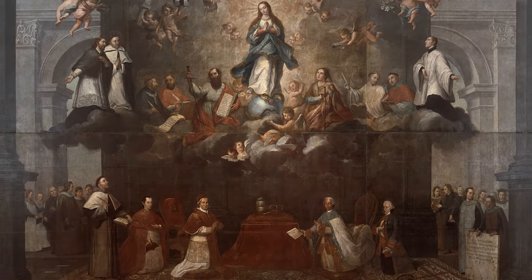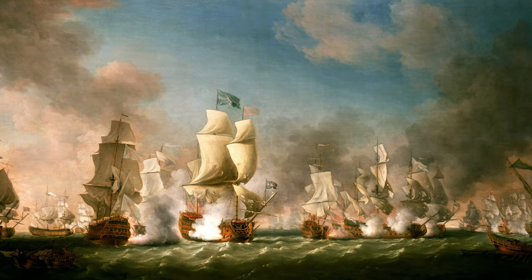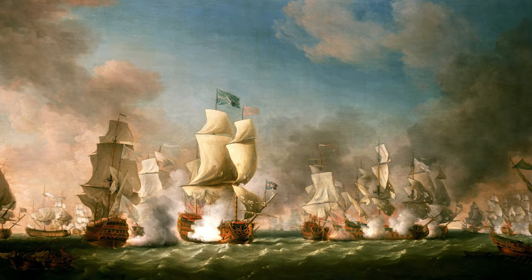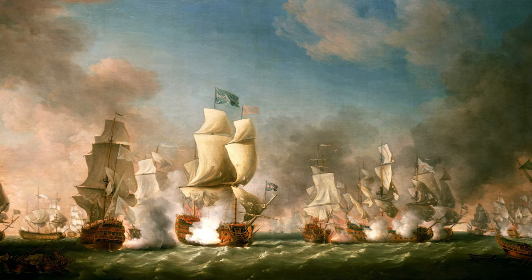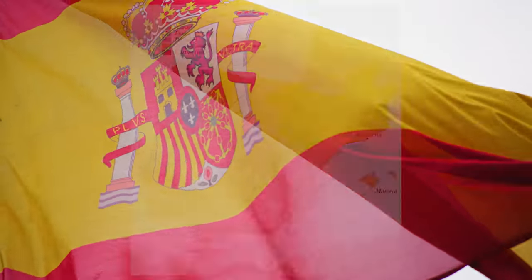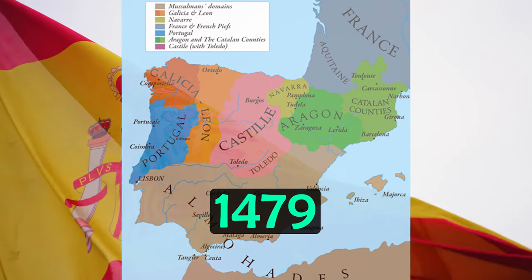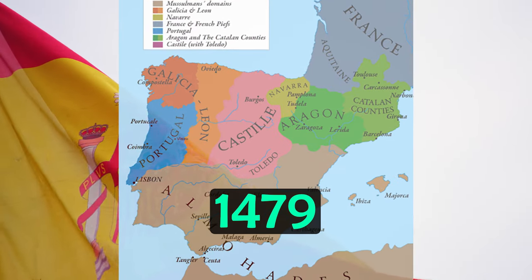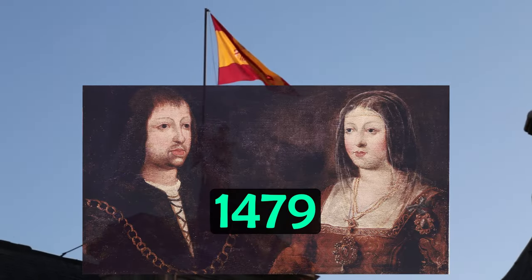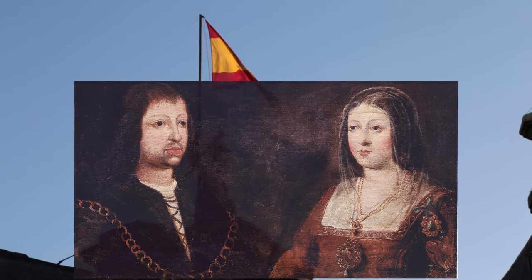Spain formed into a unitary state in the late 15th century and then evolved over the centuries, including obviously having a major imperial phase. Two early events were critical in the formation of Spain. Firstly, the dynastic union of the Crown of Castile and the Crown of Aragon in 1479 under the Catholic monarchs is often considered the de facto unification of Spain as a nation state.